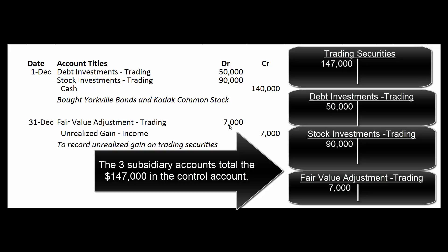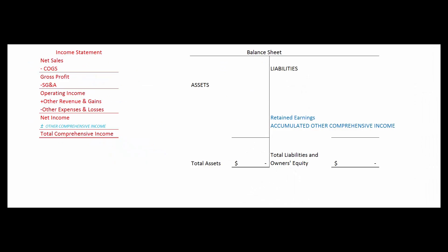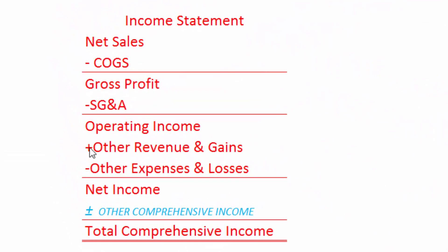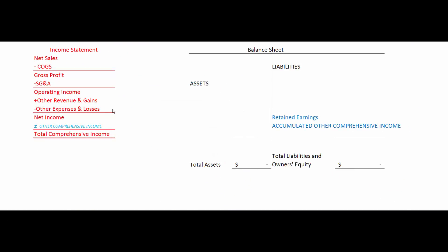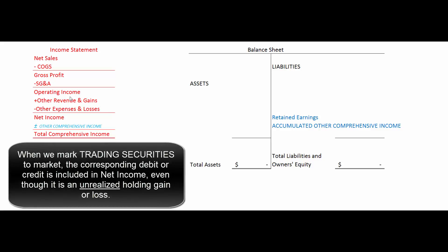Think of the fair value adjustment as a sub-account of the Trading Securities control account. We don't debit or credit the debt investments or stock investments accounts directly, because we want to remember how much we paid so we know what gain or loss to book when we sell. The credit goes to unrealized gain — income, which signals that for trading securities, unrealized gains and losses are part of net income. That $7,000 would appear under other revenue and gains on our income statement, and net income closes into retained earnings. Even though we didn't sell, we book the gain because it's a trading security — we told the world we can buy and sell these things and make money, so we have to put our money where our mouth is.